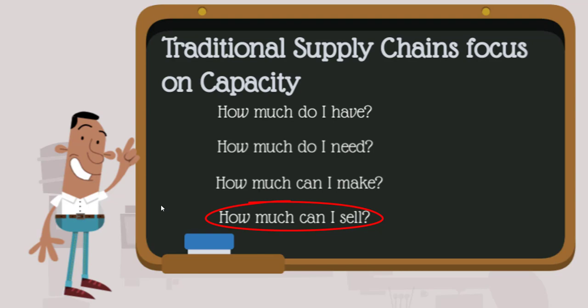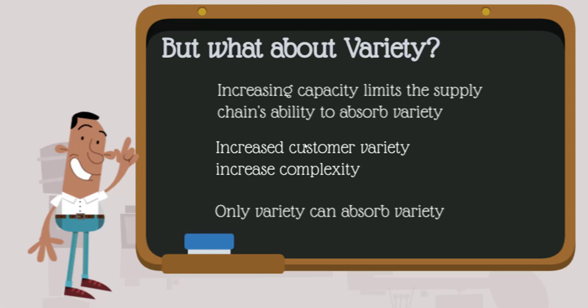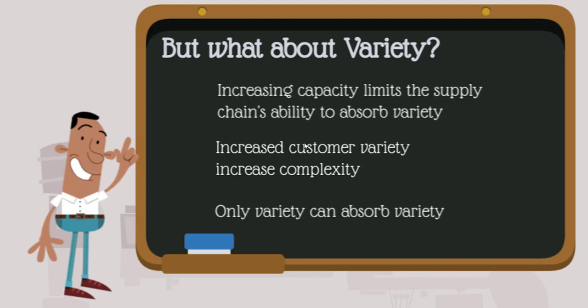This can result in having too much product on hand, especially when your demand forecast is different from what is actually demanded at the time of sale. Yet most supply chains ignore variety in the system. Variety is generally the different models or different types of products within a supply chain. Increasing the capacity of a supply chain limits its ability to absorb variety unless the capacity is designed to absorb variety.